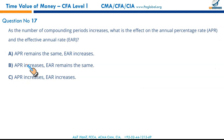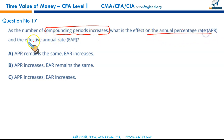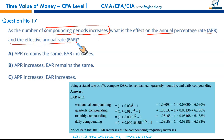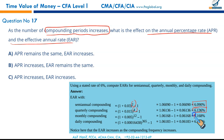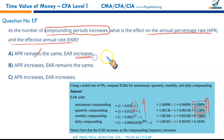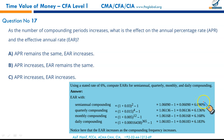As the number of compounding periods increases, what is the effect on the APR and EAR? When compounding increased from twice to four times a year, the effective annual rate went up further. The APR remains the same, but EAR increases as compounding frequency increases.